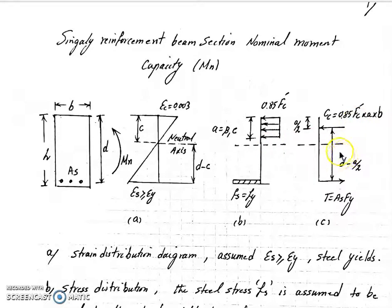We have T which is equal to As fy. We have As over here and fy is the yield strength of the steel rebar. The distance between these two is d minus a over 2. Cc is located on the center of a, so that's why we have a over 2 over here.